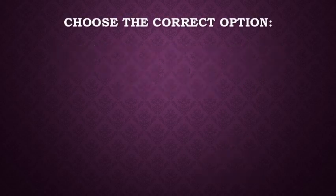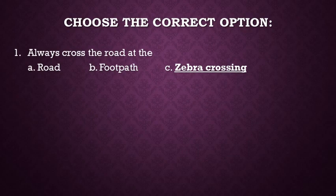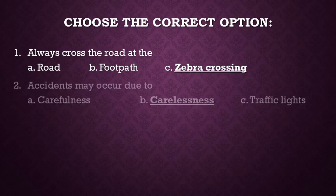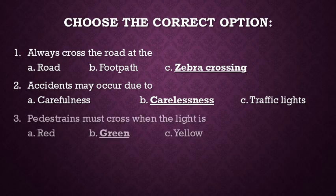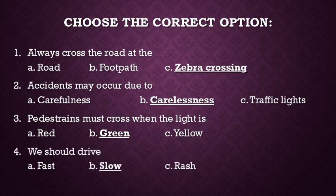Choose the correct option. Number 1: Always cross the road at the zebra crossing. Number 2: Accidents may occur due to carelessness. Number 3: Pedestrians must cross when the light is green. Number 4: We should drive slow.